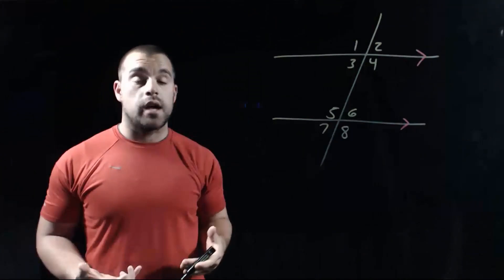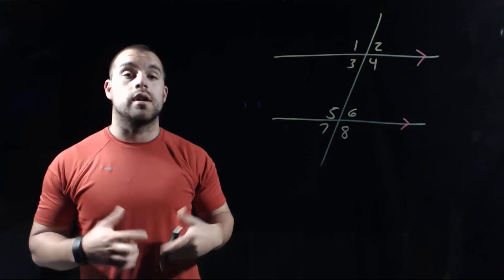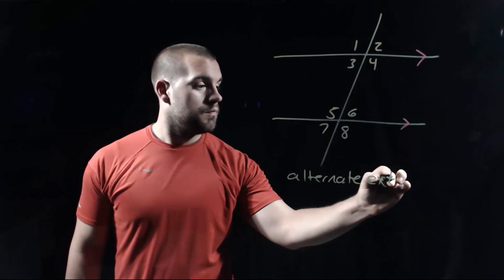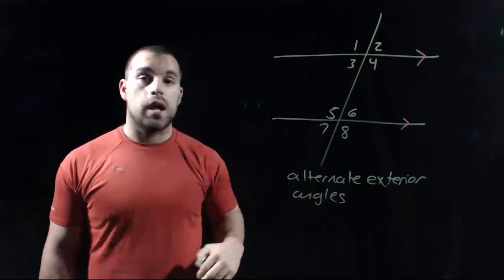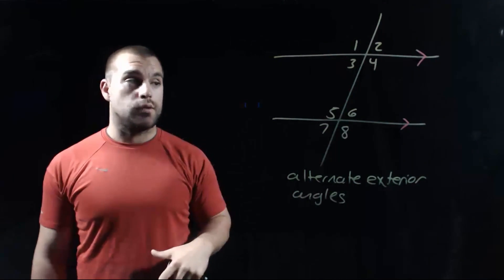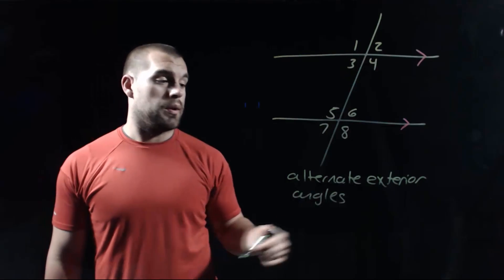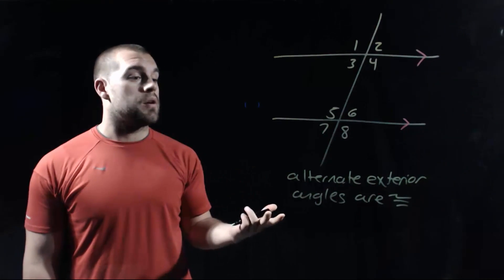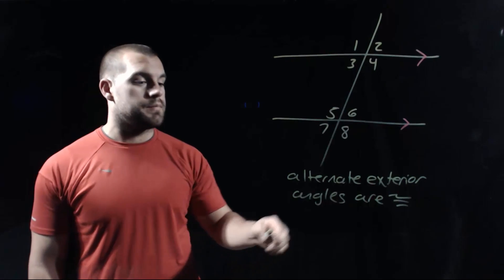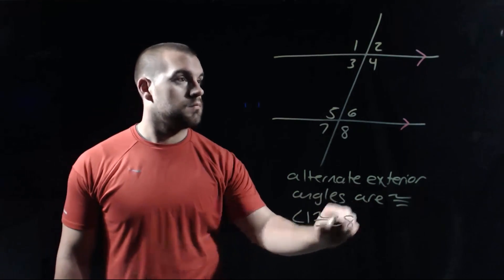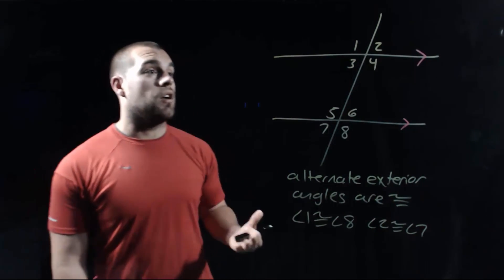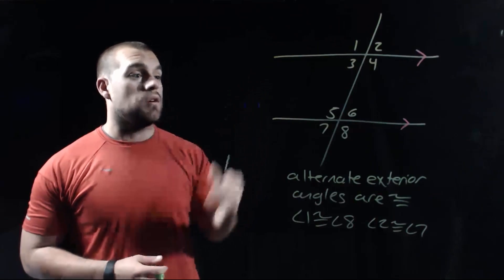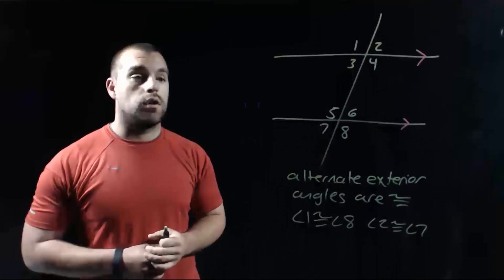Our next angle pair that we talked about was alternate exterior angles. Much like the other angle pairs we've talked about so far, these are also congruent. So in our picture we've got two pairs of alternate exterior angles. We've got angle 1 and angle 8 — those are congruent — and we've also got angle 2 and angle 7, and those angles are congruent.